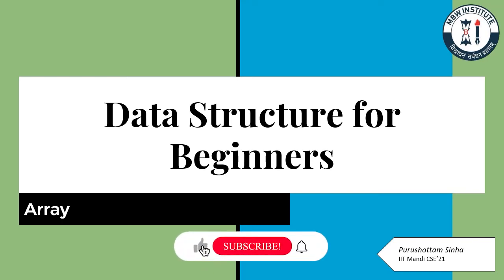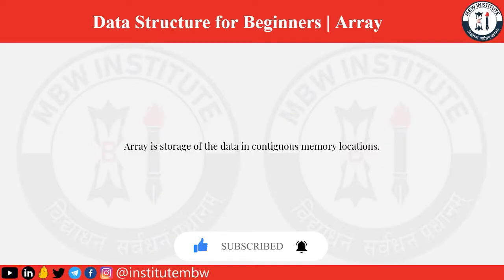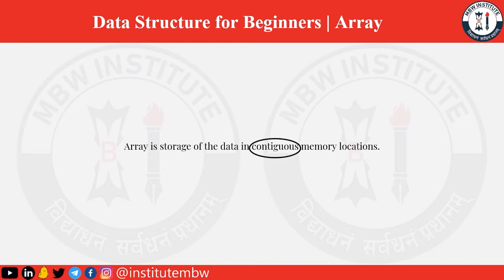Hello, welcome to the second lecture of Data Structure for Beginners. We would be talking about arrays. Array is the most basic type of data structure which is used to store data of the same type. This data is stored in continuous numeric locations. Usually it is used to store data with a common theme.